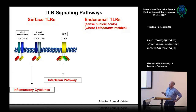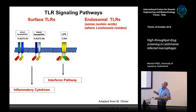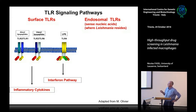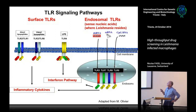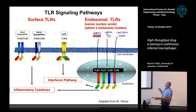Surface receptors recognize specific lipopeptides — for example TLR2 and TLR6, which recognize diacyl lipopeptides, or TLR2/TLR1 recognizing triacyl lipopeptides. And there is TLR4, which was already mentioned today, which recognizes LPS, with production of interferon and inflammatory cytokines. Then you have the endosomal TLRs, found in endosomes as the name indicates, and they sense nucleic acids.